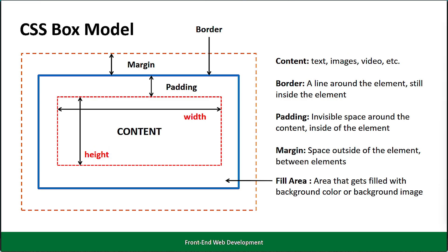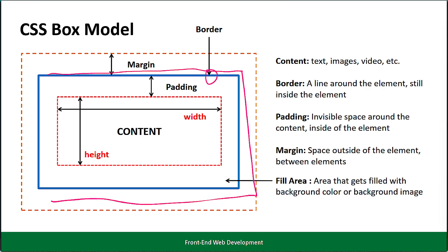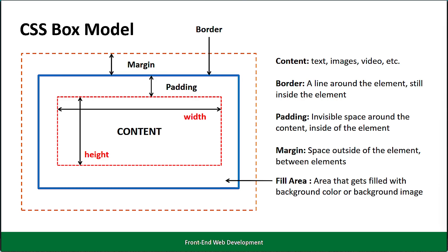Encircling the content is the border — shown here in blue — which is a line that wraps around the content and its padding. It can be styled using several properties such as border-width, border-style, and border-color. Borders are instrumental in providing visual separation between elements and can be customized to enhance the aesthetics of your design, allowing you to create everything from simple dividers to attention-grabbing outlines.